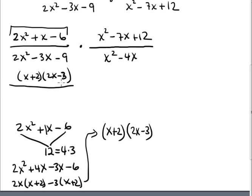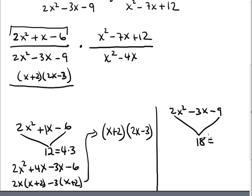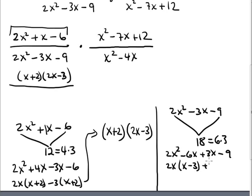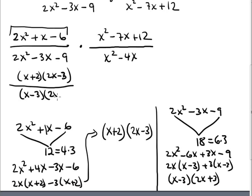Now factor the second polynomial: 2x squared minus 3x minus 9. Multiplication gives 18. The factors are 6 and 3 because 6 times 3 is 18 and 6 minus 3 is 3. So: 2x squared minus 6x plus 3x minus 9. By grouping: the GCF of the first pair is 2x, giving (x - 3); GCF of the second pair is 3, giving (x - 3). So x minus 3 is a common factor: (x - 3)(2x + 3).